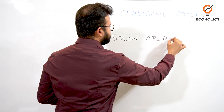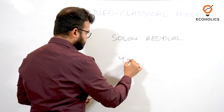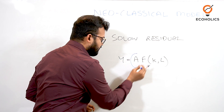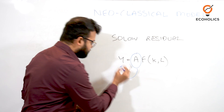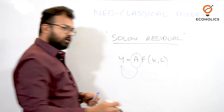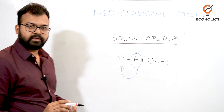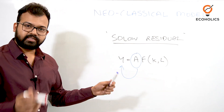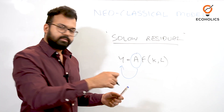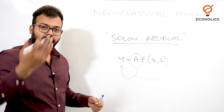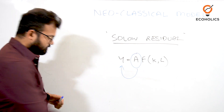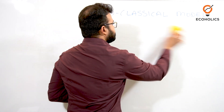Another important term in this model is the Solow Residual, which is very important for examination purposes. The Solow Residual refers to the effect of technology (A, i.e., total factor productivity) on the GDP growth rate, independent of K and L. For example, if an accountant doing accounts on pen and paper is given a computer, their efficiency goes up — that is technology affecting labor efficiency. The effect of technology on GDP growth rate is called the Solow Residual.